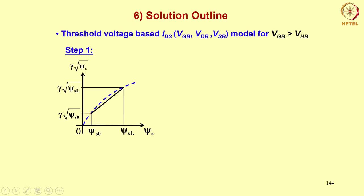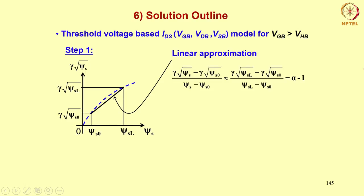Corresponding to ψs0, I have γ√ψs as γ√ψs0. Let us see what linear approximation we can do in this regime. Linear approximation: γ√ψs minus γ√ψs0, divided by ψs minus ψs0 is given by this formula.